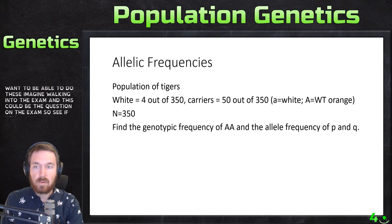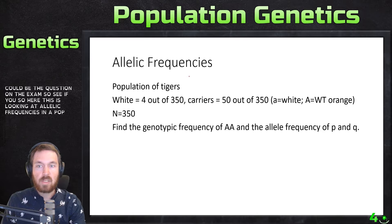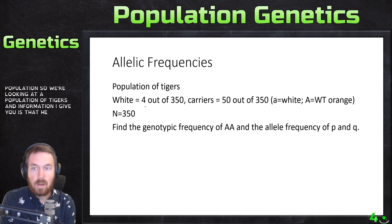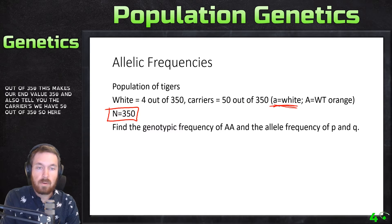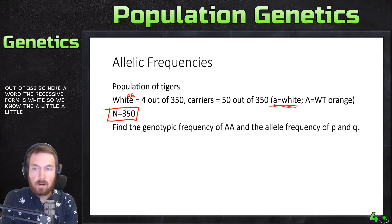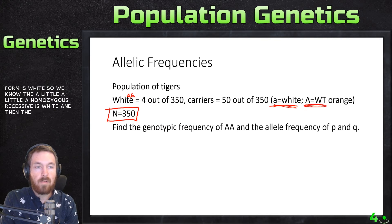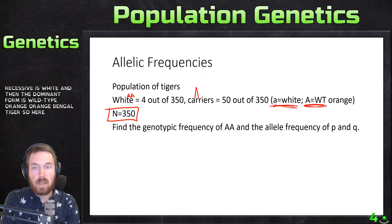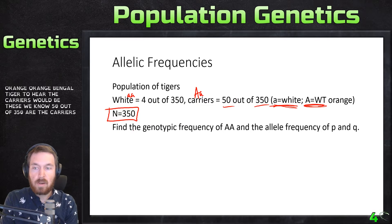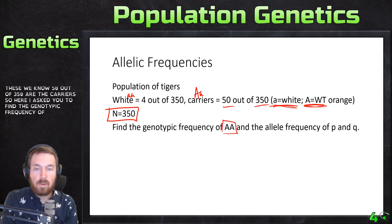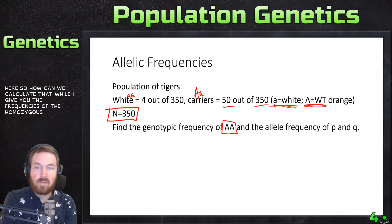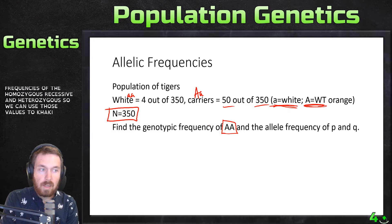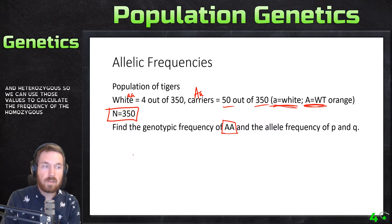Here's the first problem on allelic frequencies. We're looking at a population of tigers. White tigers are 4 out of 350, making our n value 350. Carriers are 50 out of 350. The recessive form (little a little a, homozygous recessive) is white, and the dominant form is wild type, the orange Bengal tiger. I ask you to find the genotypic frequency of the homozygous dominant, which I don't give you directly.